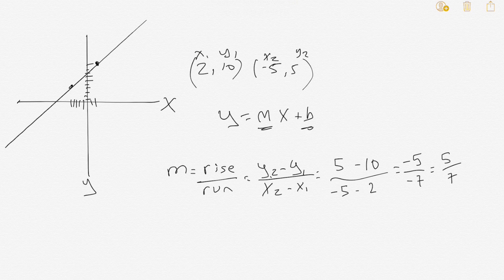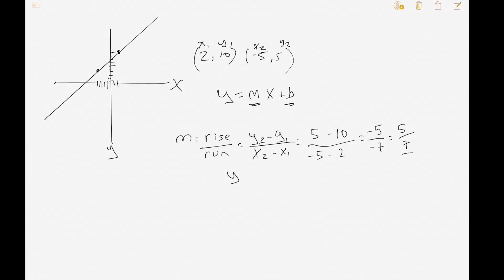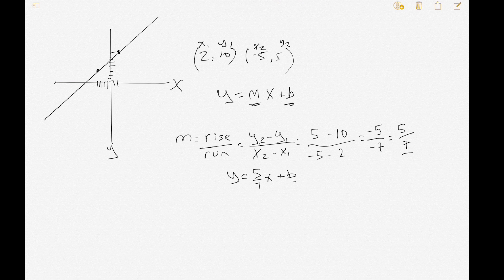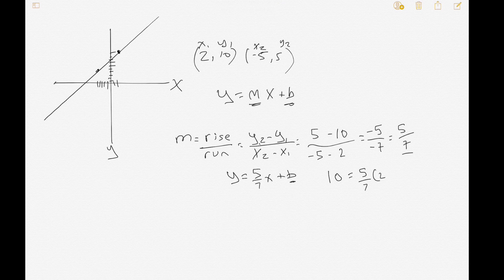Now we want to get the y-intercept. So we got y equals m which is 5/7 times x plus b. To get the y-intercept we just plug in either point. I would probably plug in the (2,10) because it looks a little easier than the (-5,5), but it doesn't matter which one you plug in. Let's go with (2,10). So you plug in 10 for y: 10 equals 5/7, and you plug in 2 for x, plus b.